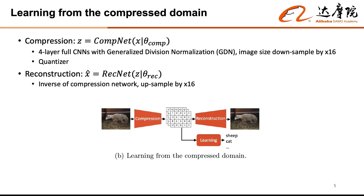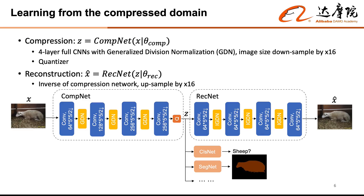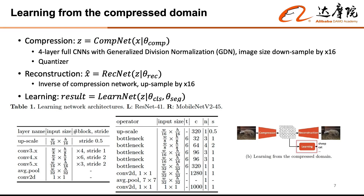Let's now look at some details. The compression network downsamples the image by 16 times, and the reconstruction network upsamples it 16 times. The compression and reconstruction networks have the following architectures. With the compressed features, we could either reconstruct the images or directly conduct the learning tasks. We use ResNet and MobileNet as the backbone of the learning tasks. Note that the input to the learning network is the compressed features, not the reconstructed images.